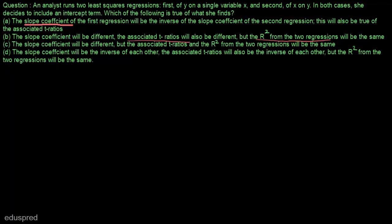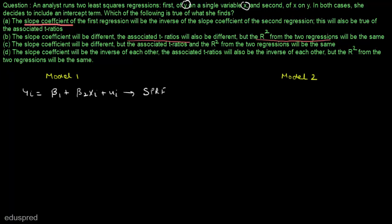Let's write the models. We are given two models: model one and model two. The first regression is of y on a single variable x. I will use capital Y and capital X notation. We can write the stochastic population regression function as: Yi = β₁ + β₂Xi + ui. This is the stochastic population regression function for model one. The sample counterpart, the stochastic sample regression function, is: yi = b1 + b2·xi + ei.